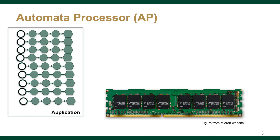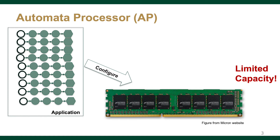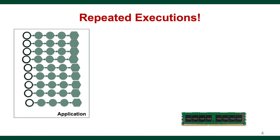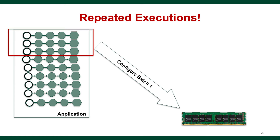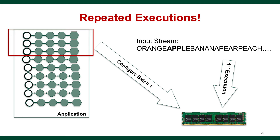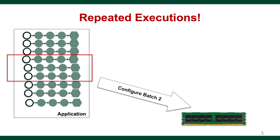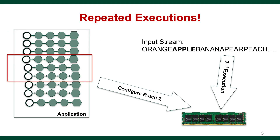Prior to execution, the states and transitions of finite-state machines are configured to the AP. However, the capacity of AP is limited. If an application has too many finite-state machine states to fit into AP, the application will be split into batches, which are configured and executed in the AP one by one.